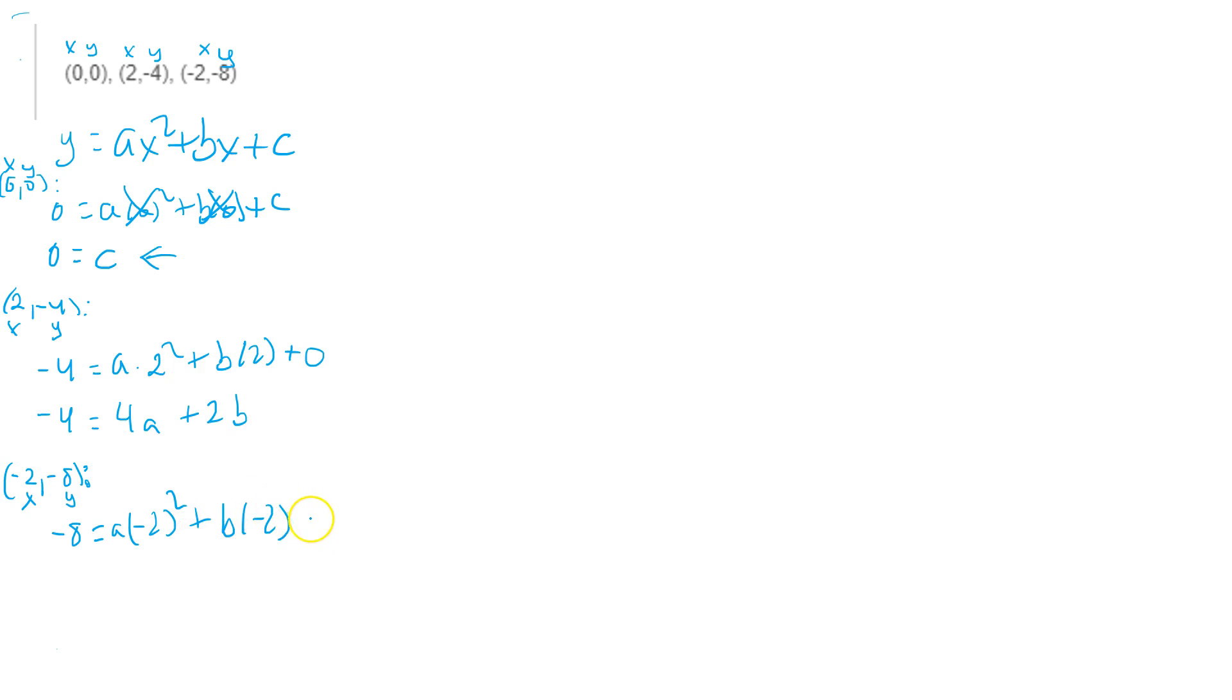And again, the value of c is known to be 0, so don't worry about it. Simplify this equation a little bit, so you're going to have -8 equals here 4a minus 2b.